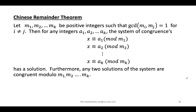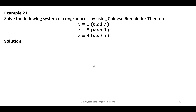The last topic is the Chinese Remainder Theorem (CRT). CRT applies when we have a system of congruences and need to find x. First, compute M = m₁ · m₂ · m₃ · … For the given example, M = 7 · 9 · 5 = 315.